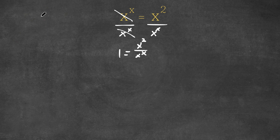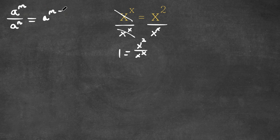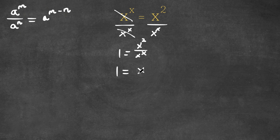Now, if we have something in the form a to the power of m divided by a to the power of n, then this is equal to a to the power of m minus n. We are going to use this property for x to the power of 2 divided by x to the power of x. We can think of 2 as m and x as n, so this would be x to the power of 2 minus x.